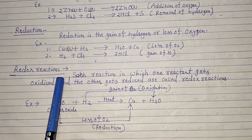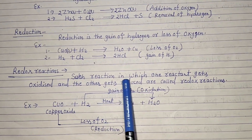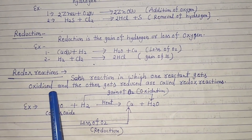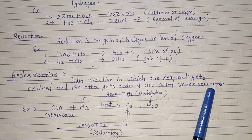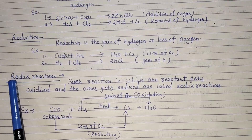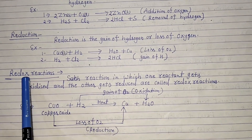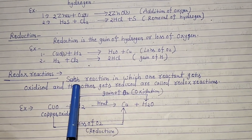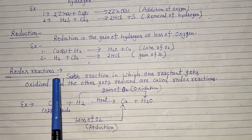Next: redox reaction. A redox reaction is defined as a reaction in which one reactant gets oxidized and the other gets reduced. Redox = red (reduction) + ox (oxidation) — reduction and oxidation combined together is called a redox reaction.